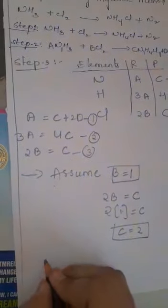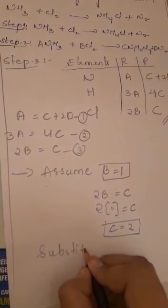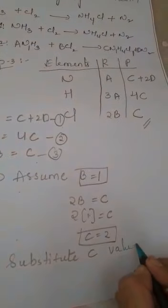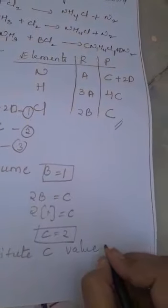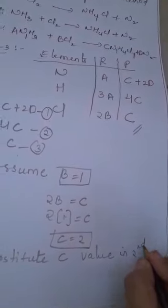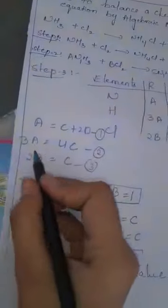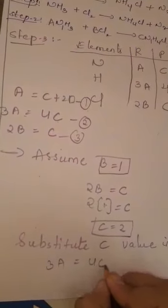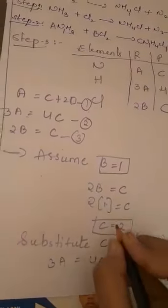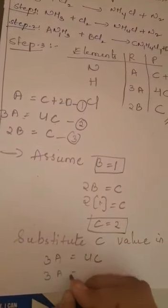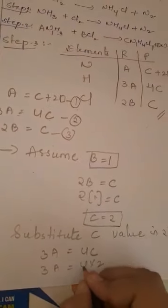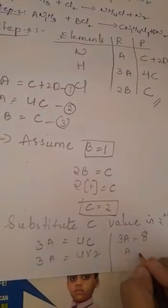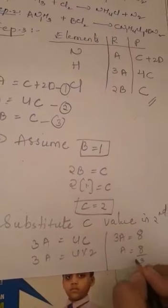Now we need to substitute the C value into the 2nd equation. The 2nd equation is 3A equals 4C. Substituting C equals 2: 3A equals 4 into 2, which is 8. So 3A equals 8, and therefore A equals 8 by 3.